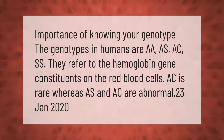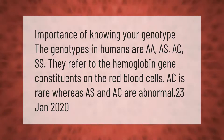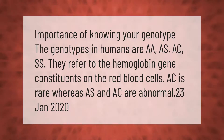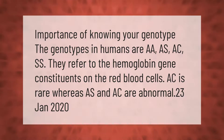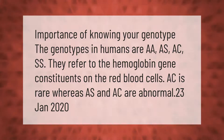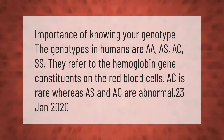Importance of knowing your genotype: the genotypes in humans are AA, AS, AC, and SS. They refer to the hemoglobin gene constituents on the red blood cells. AC is rare, whereas AS and AC are abnormal.